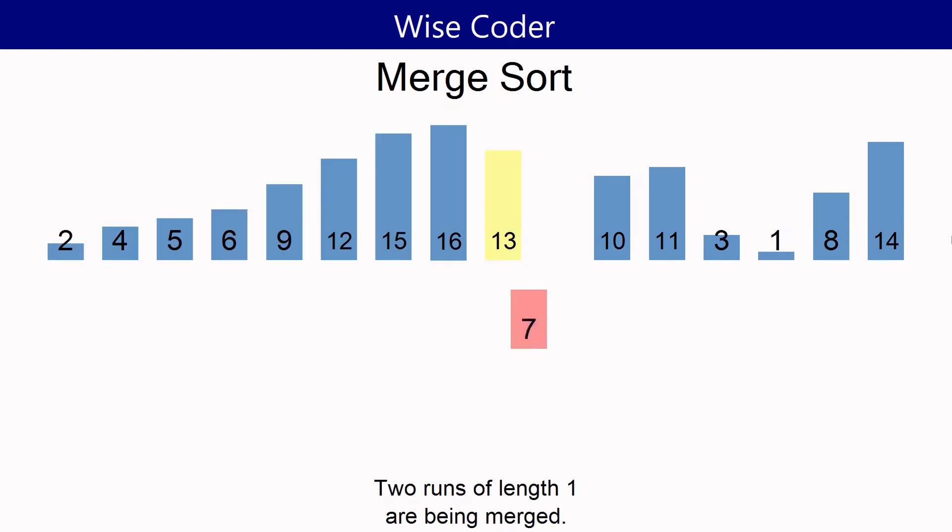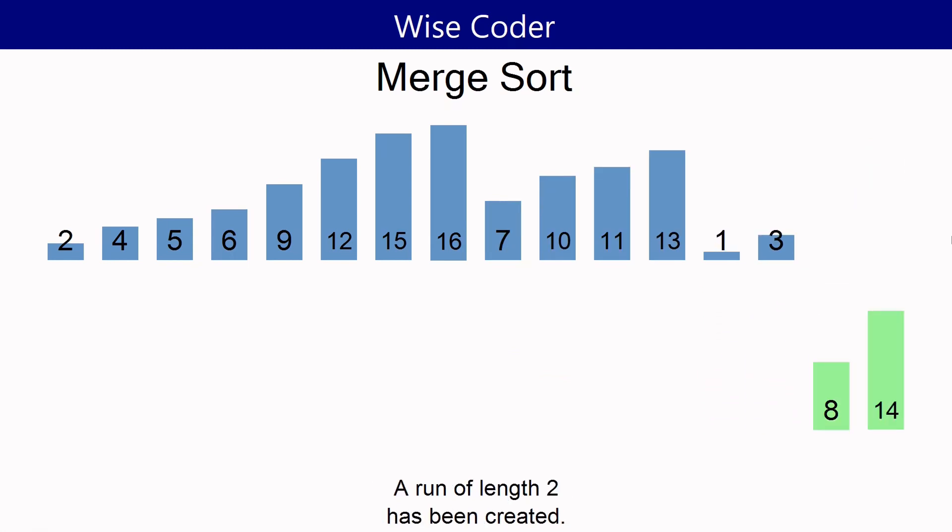The depicted animation showcases the top-down recursive approach of Merge Sort. However, there are other implementation variations. For example, some start by sorting sequences of length 2, then length 4, and so on, until they culminate in a single, fully sorted sequence.